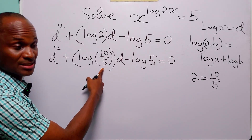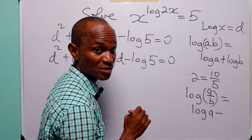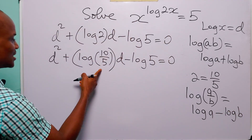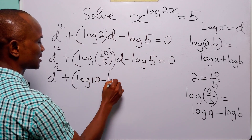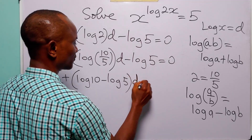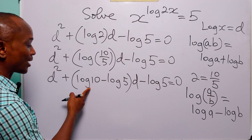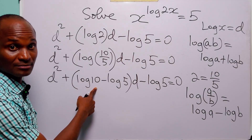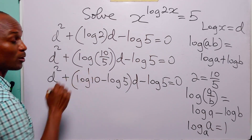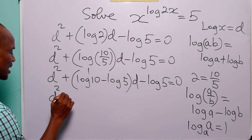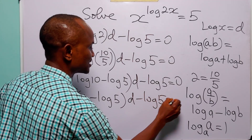Now you can see that we have a quotient. Remember that log(a/b) is equal to log a minus log b. So this becomes d squared plus (log 10 minus log 5) multiplied by d, minus log 5, equal to 0. Remember that we are working in base 10, so log base 10 of 10 equals 1. Therefore this equation becomes d squared plus (1 minus log 5) multiplied by d minus log 5 is equal to 0.